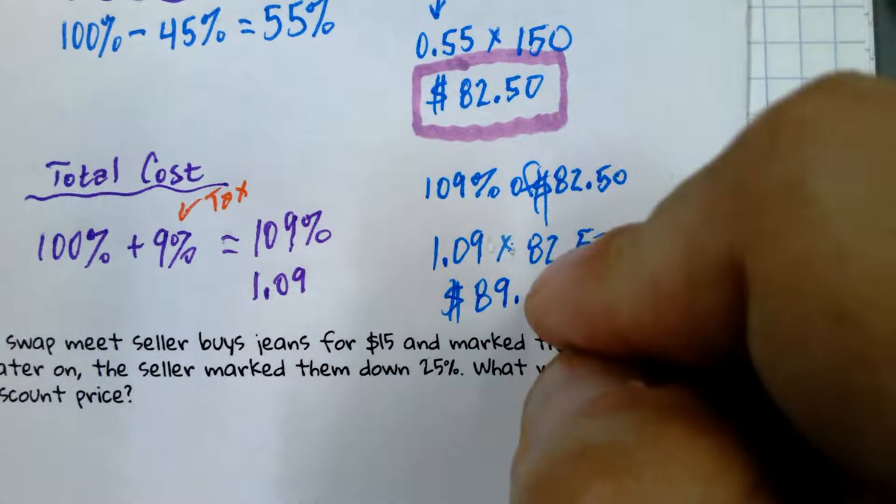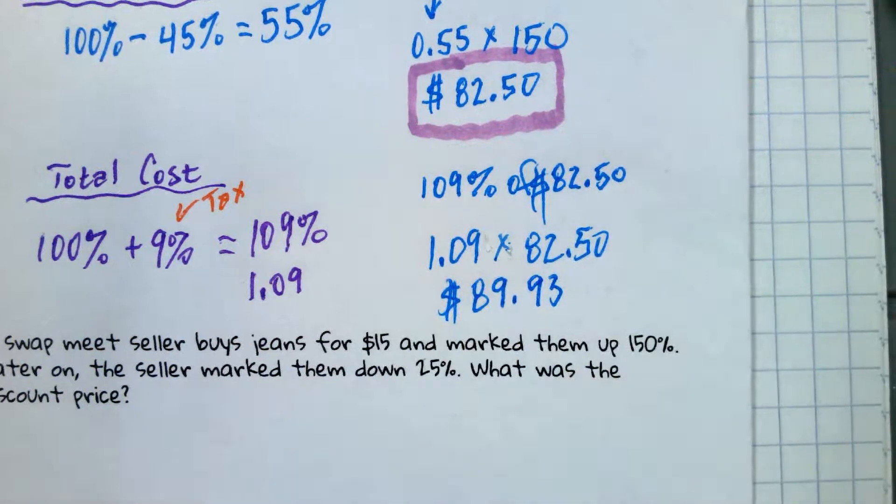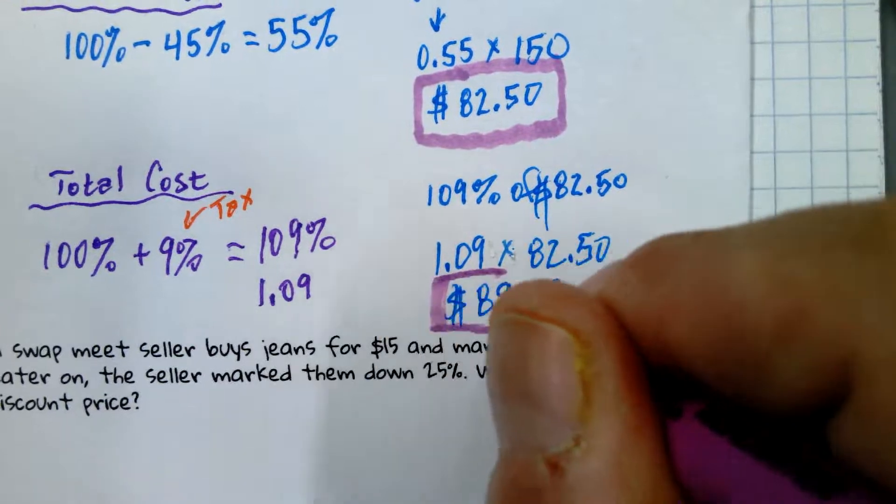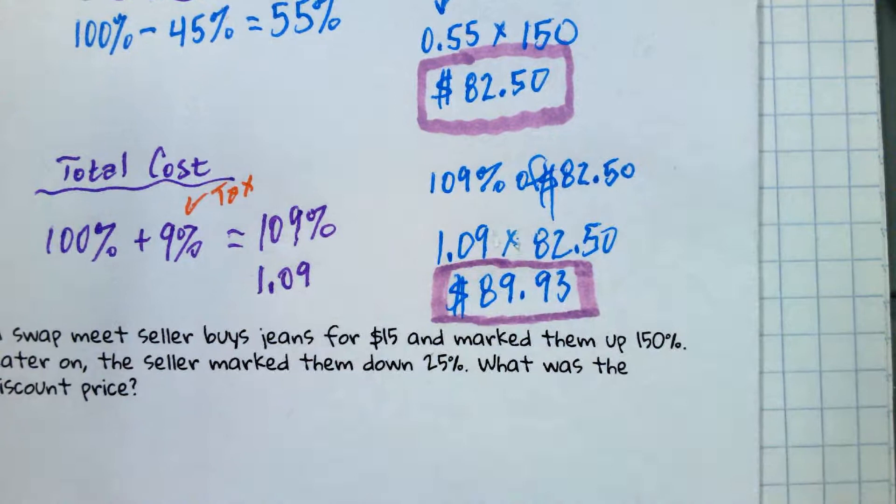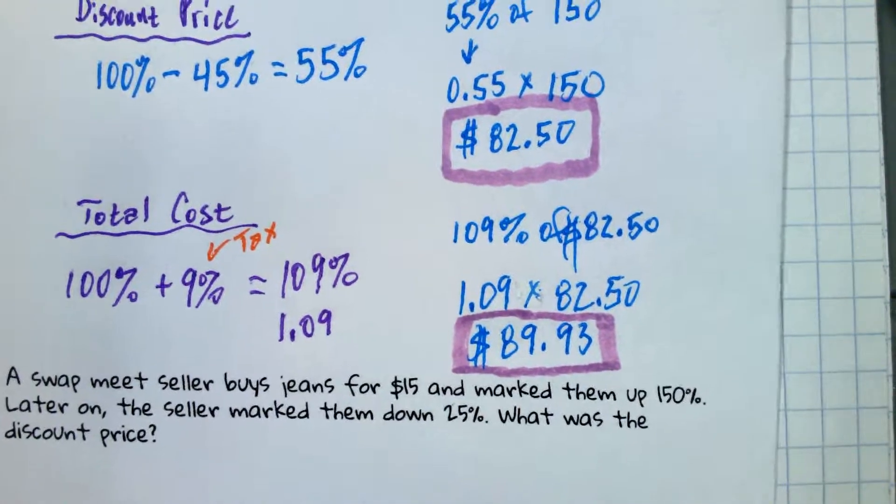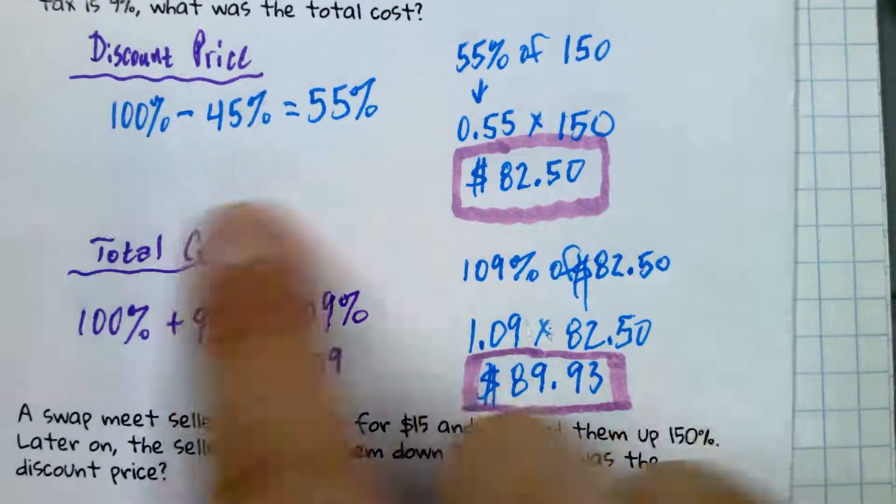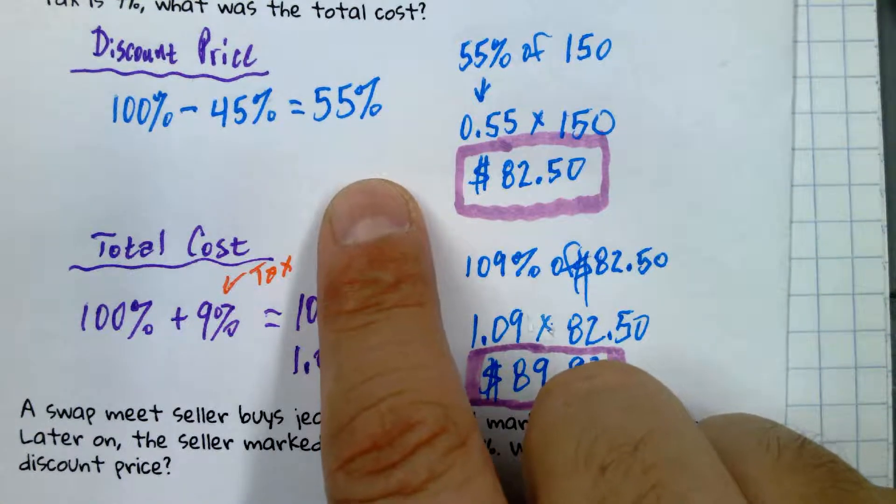So we want 109% of $82.50. So that's 1.09 times $82.50. So with the discount and adding the tax, it is $89.93. So you got to be careful with this stuff. You know what they say, with great power comes great responsibility.